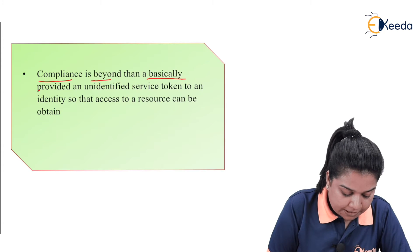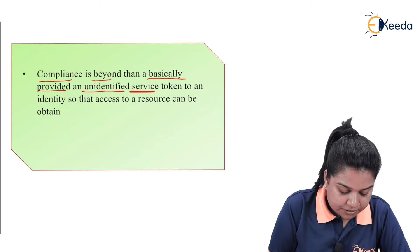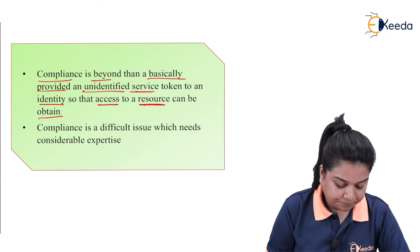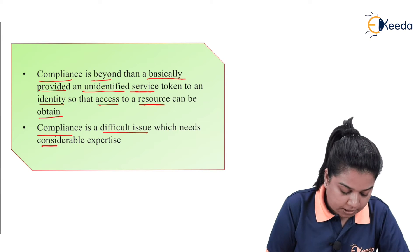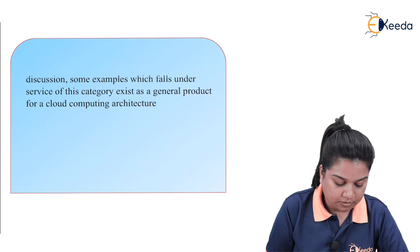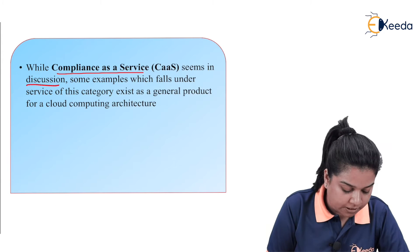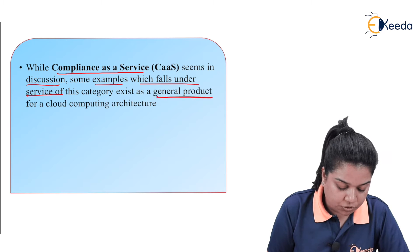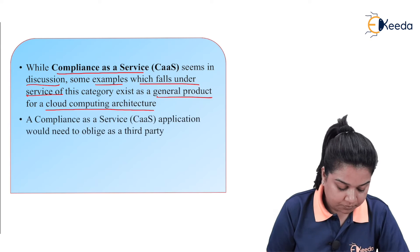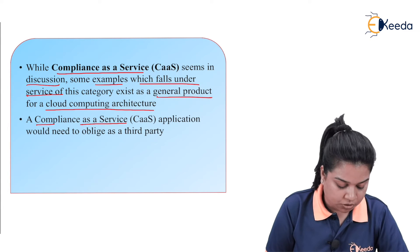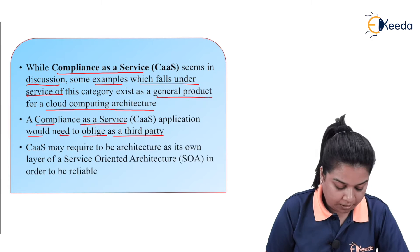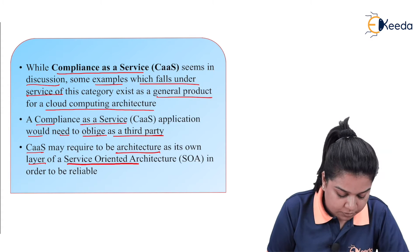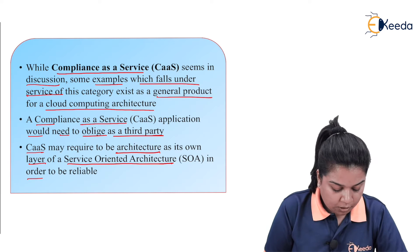Compliance is beyond basically providing an unidentified service token to an identity so that access to a resource can be obtained. Compliance is a difficult issue which needs considerable expertise. While compliance as a service is still in discussion, some examples which fall under this category exist as a general product for a cloud computing architecture. A compliance as a service application would need to oblige as a third party and may require architecture as its own layer of a service-oriented architecture in order to be reliable.